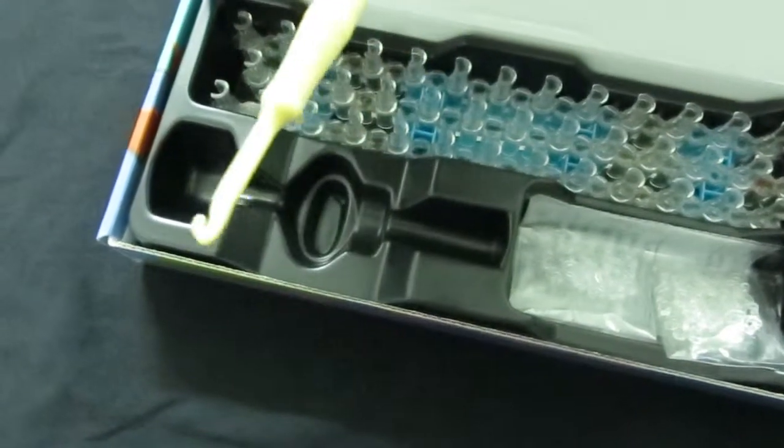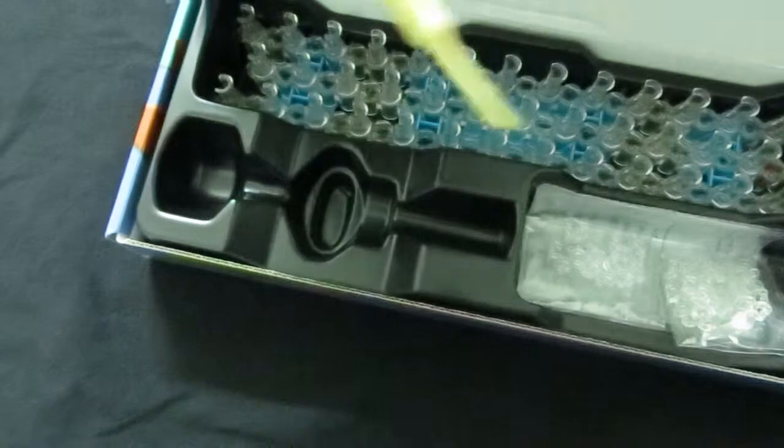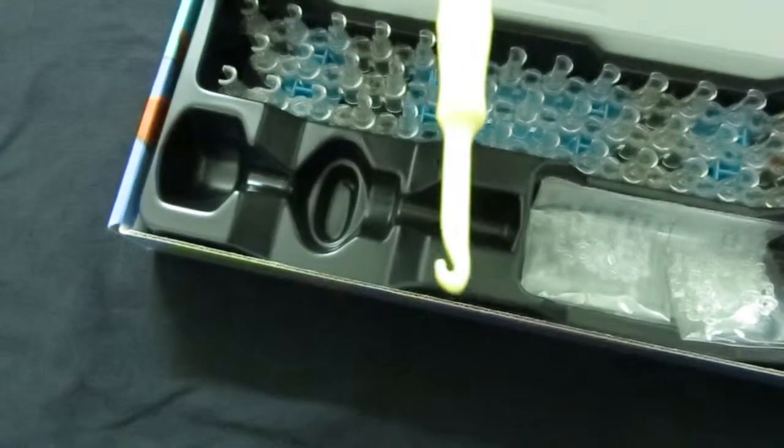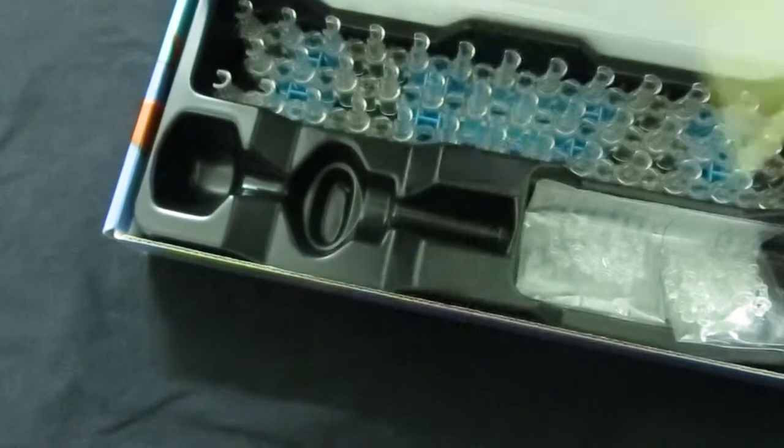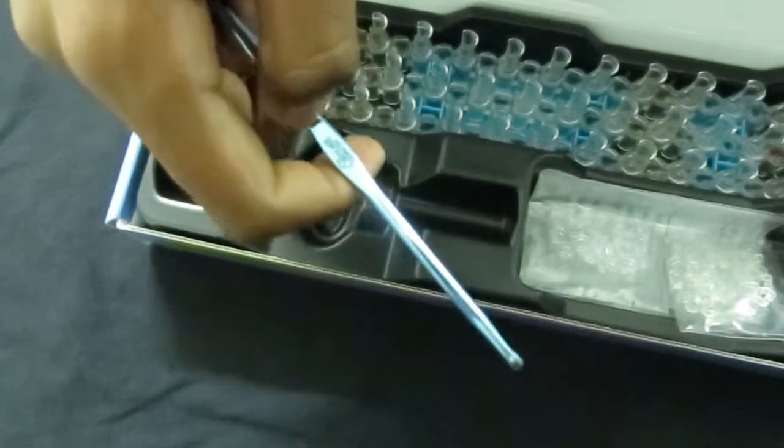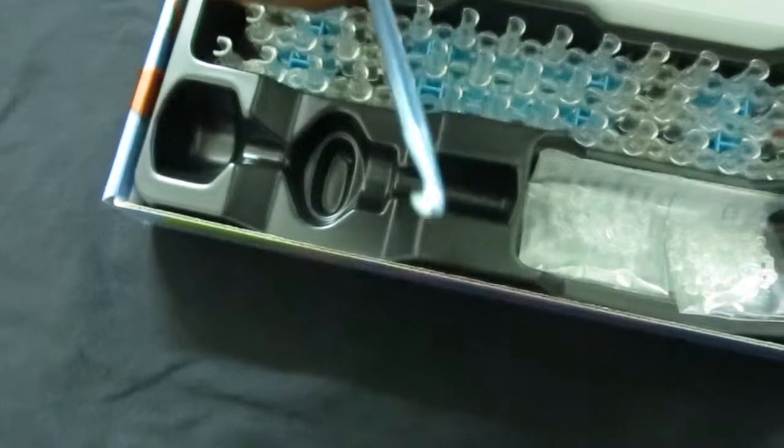This is called the Rainbow Loom. What this does is it looms the band together, but of course I like to call this a crochet because this one snapped off and I got a metal one instead. The metal one works way more efficiently.